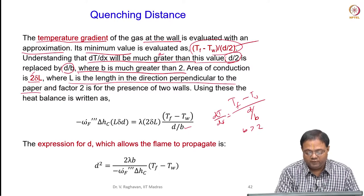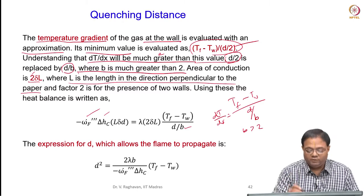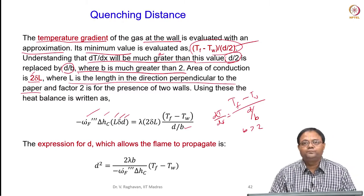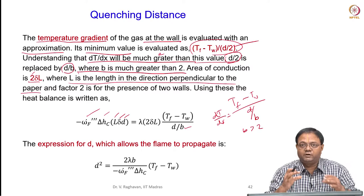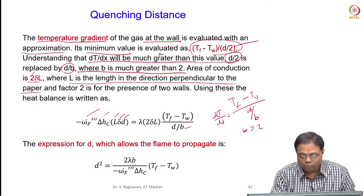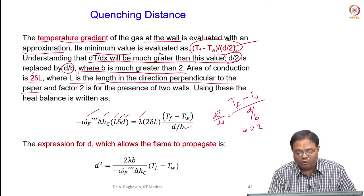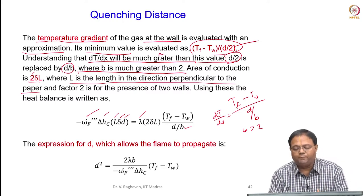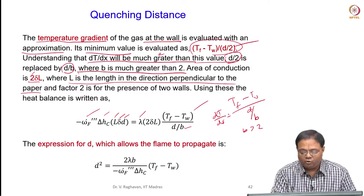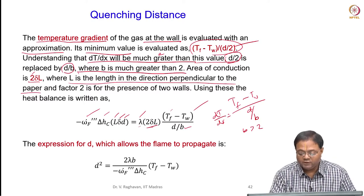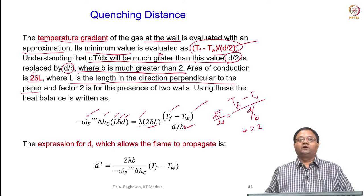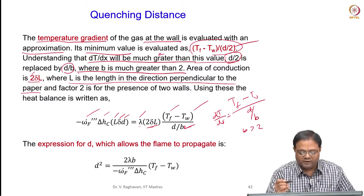Substituting this, you can see: reaction rate times ΔHc times volume, where volume is δL times D — the volume of the gas which has just burnt. Now on the right-hand side, the negative sign disappears because we have taken the absolute value of the gradient. So this is the thermal conductivity times area of cross section times the gradient, where we have put d/b, and b is greater than 2.